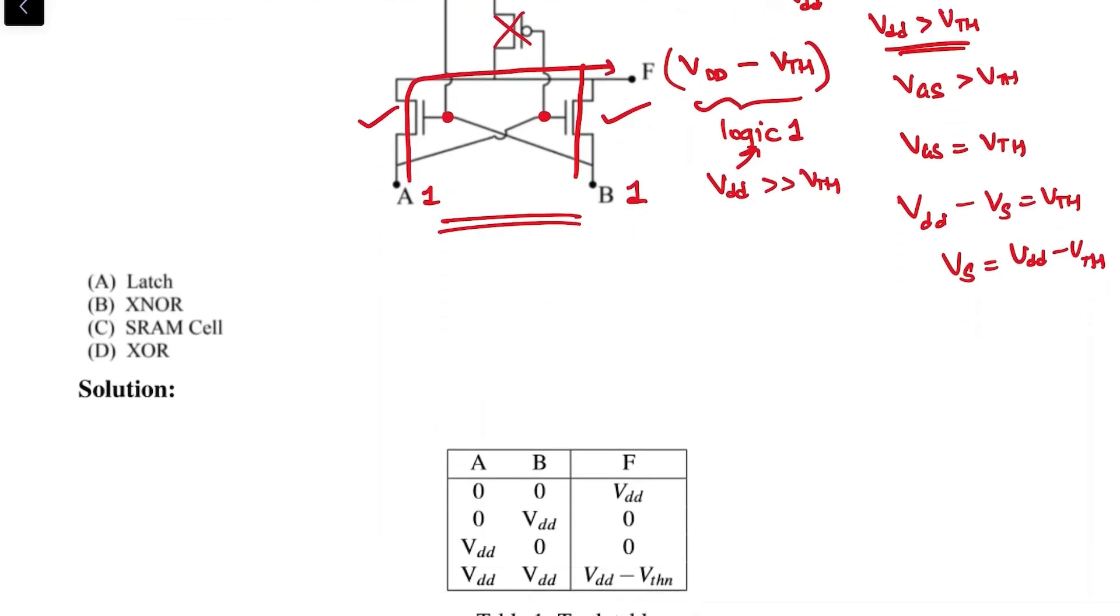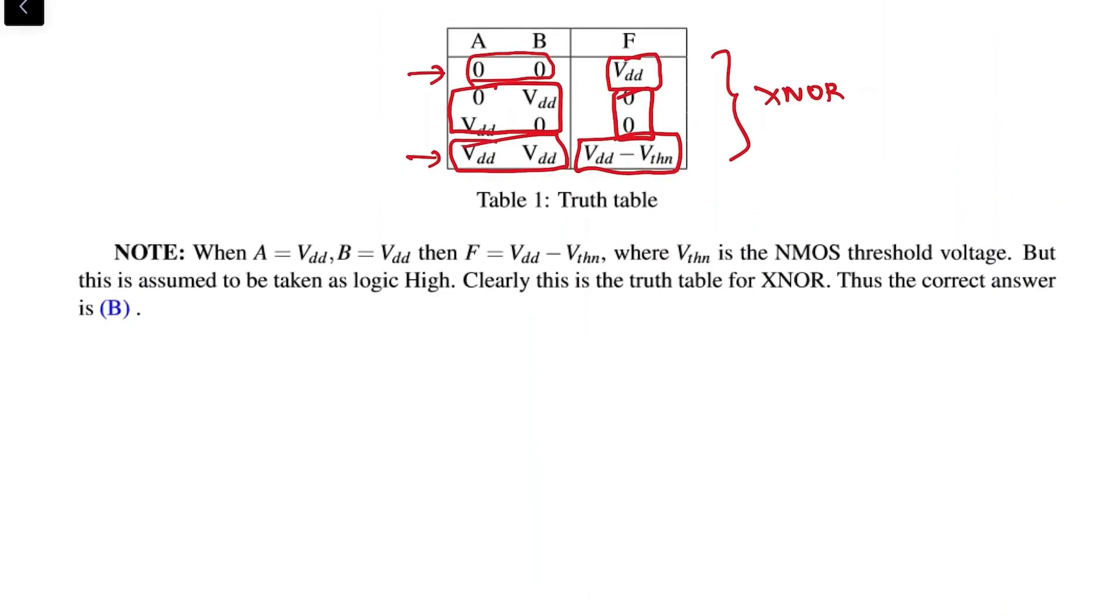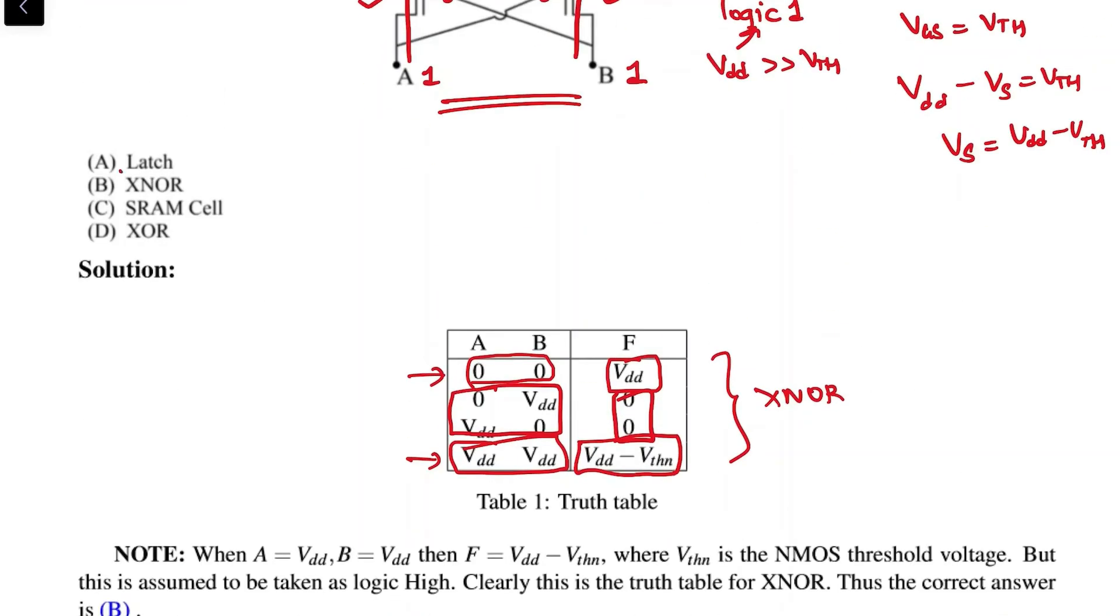This is the truth table. Clearly, you can see that when the inputs are the same, the output is logic high, and when the inputs are different, the output is logic low. This is the functionality of an XNOR circuit. Thus, the correct option is B, which is XNOR.